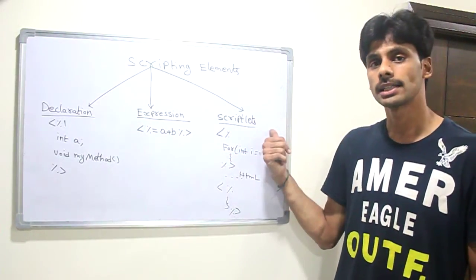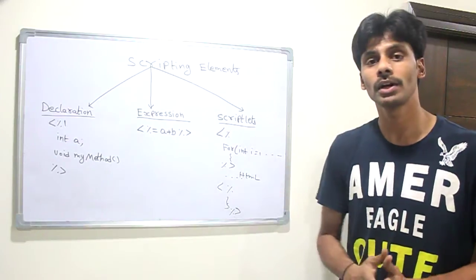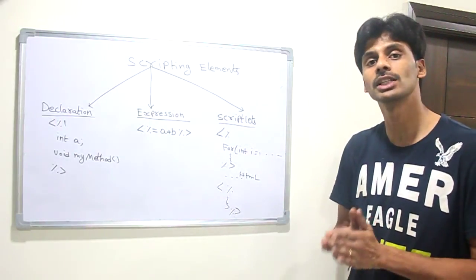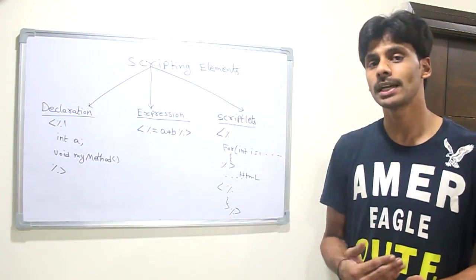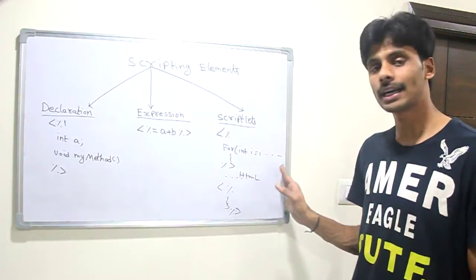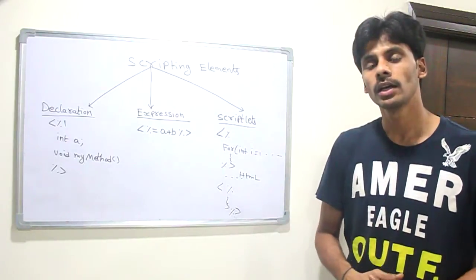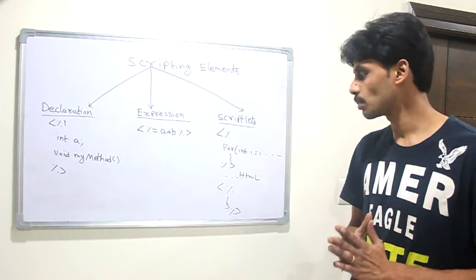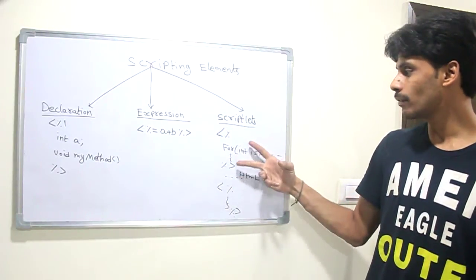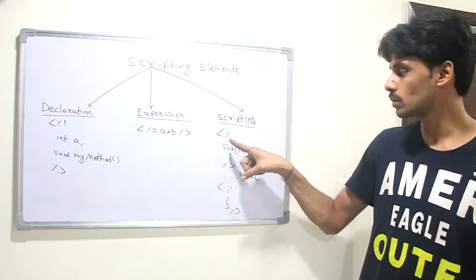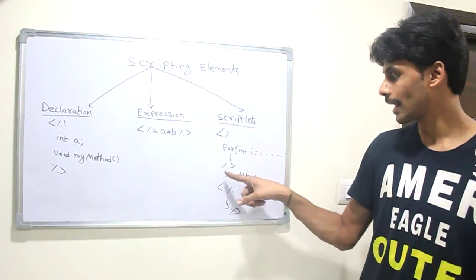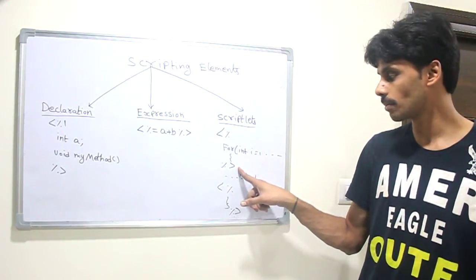Then comes the scriptlets. Scriptlets allow us to put Java code that goes into the _jspService method. When a JSP gets translated into a servlet, whatever code you put into the scriptlets will directly go into the _jspService method. For example, I have a for loop here, and I start the for loop within the first scriptlet, which starts with the less-than symbol followed by percentage — no special symbols after that. Then I close it with the percentage greater-than symbol.